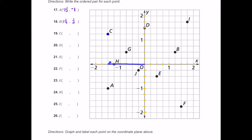Point C is over here in quadrant two. To get there, move left — that looks like negative one and a half — and then move up, which is positive one and a quarter. So the ordered pair is negative one and one half comma positive one and one quarter.